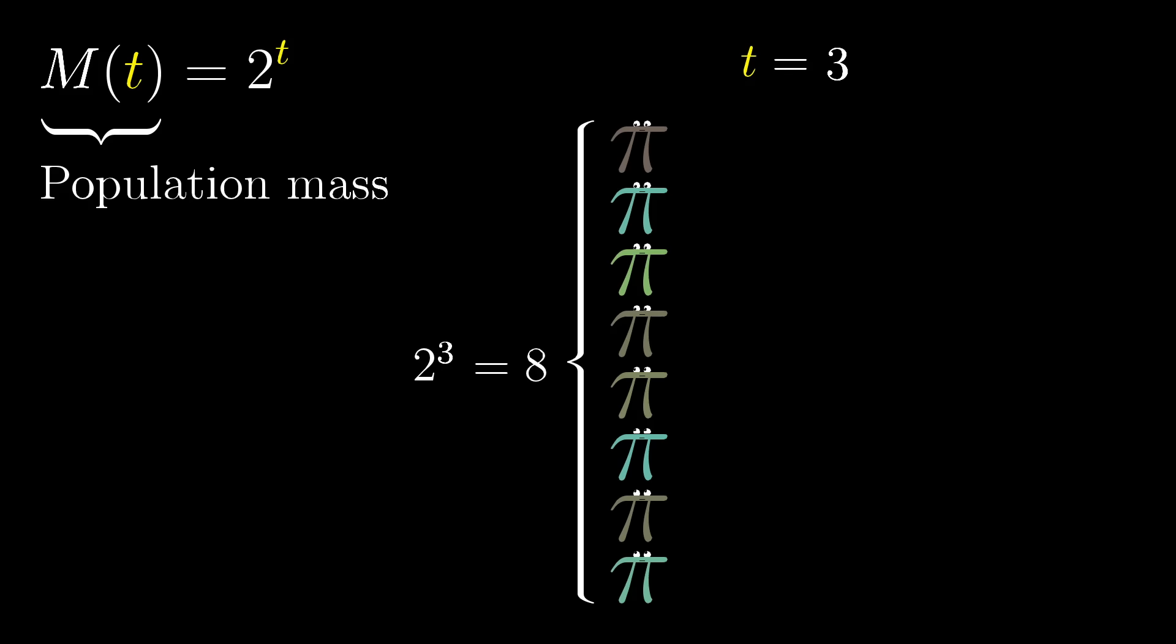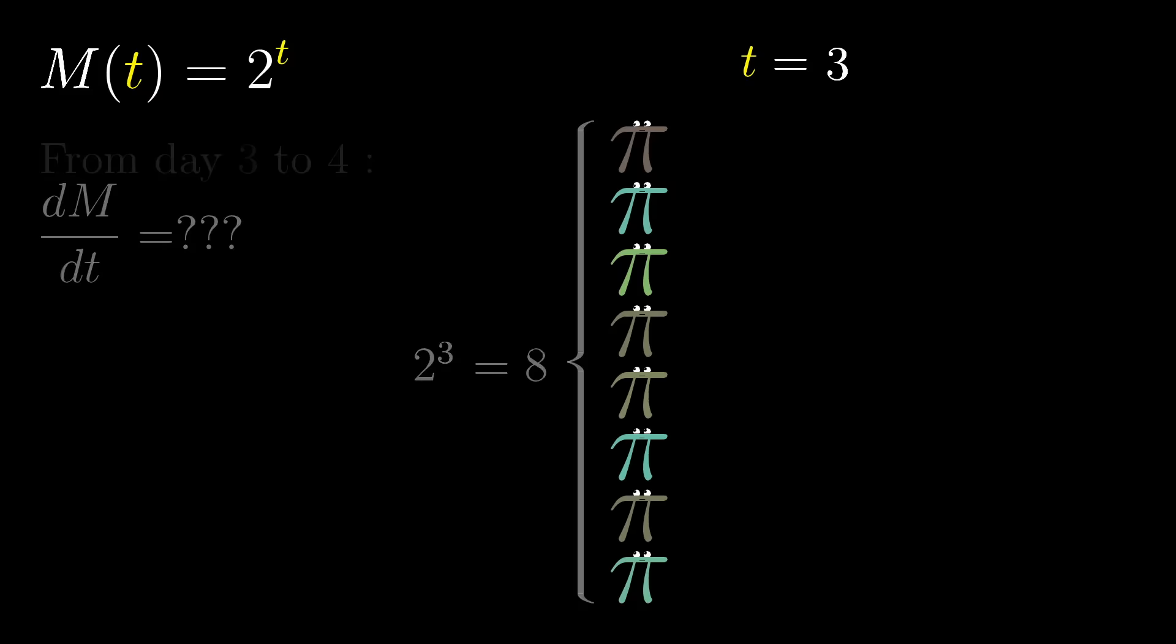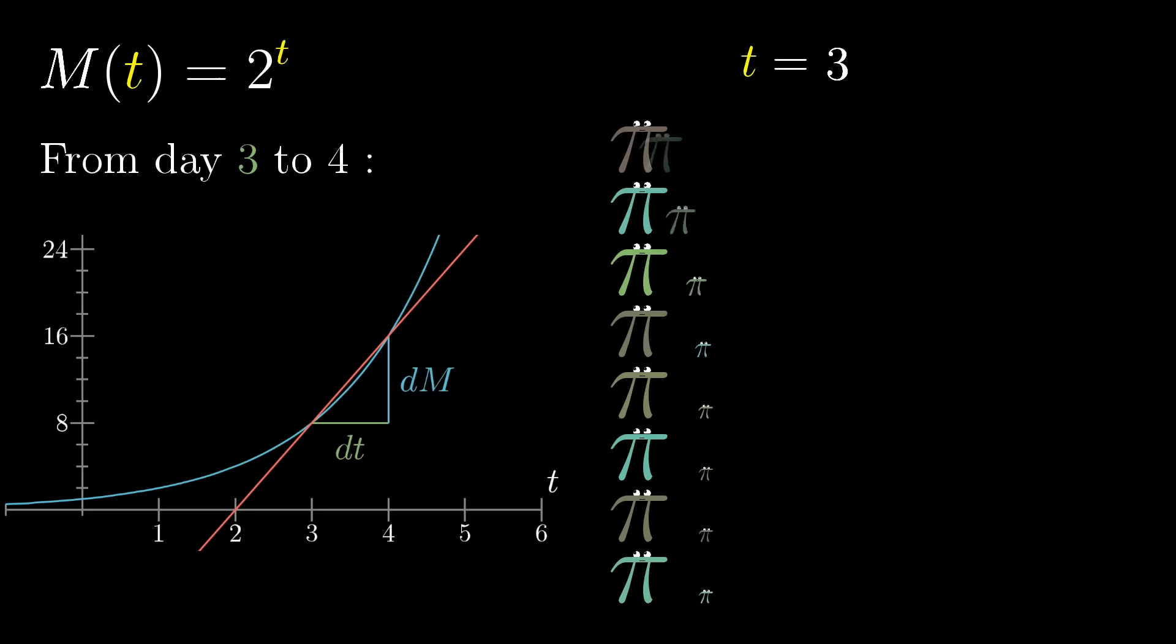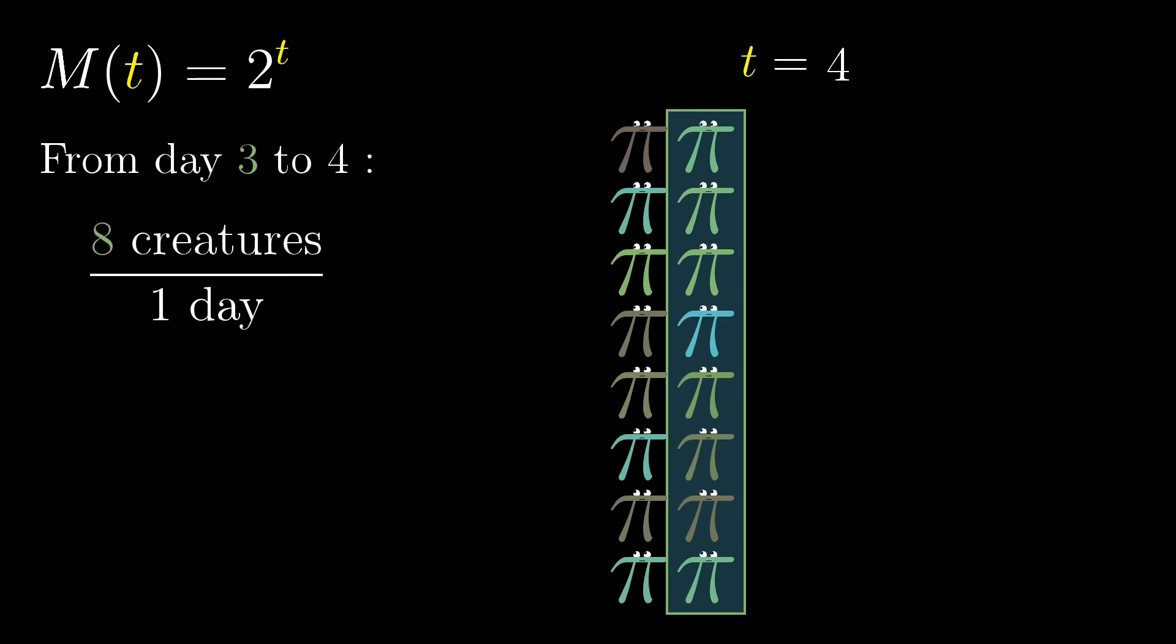For the derivative, we want dm dt, the rate at which this population mass is growing, thought of as a tiny change in the mass divided by a tiny change in time. And let's start by thinking of the rate of change over a full day, say between day 3 and day 4. Well, in this case, it grows from 8 to 16, so that's 8 new creature masses added over the course of one day.